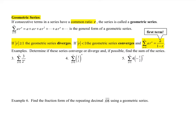So now we're going to go into what we call a geometric series. Now, if consecutive terms in a series have a common ratio, in other words, I'm multiplying by the same value every time to get to each successive term. The series is called a geometric series. In general, we have n equal to 0 to infinity of some starting term times a ratio raised to the n.